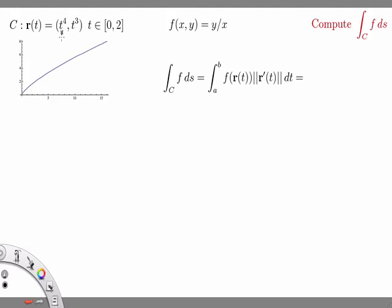These are the x and y coordinates, and this is a picture of our curve C in the xy plane. When I plug in t equals zero I get both x and y equals zero, so I'm at the origin. When I plug in t equals 2 I get this point at 16 comma 8. The curve C runs from the origin out to this point as t runs from 0 to 2.